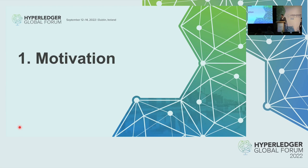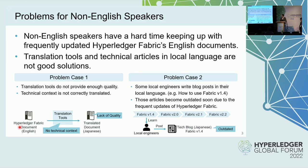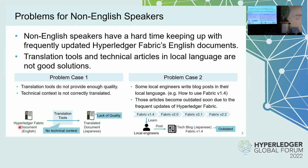The first topic is motivation — why are we here? Fabric is a great blockchain platform, so many people use it. However, non-English speakers have had difficulty keeping up with frequently updated Hyperledger Fabric documents. There are two problem cases. The first case is that translation tools do not provide enough quality. There are famous tools like DeepL or Google Translate, but they cannot understand the technical context.